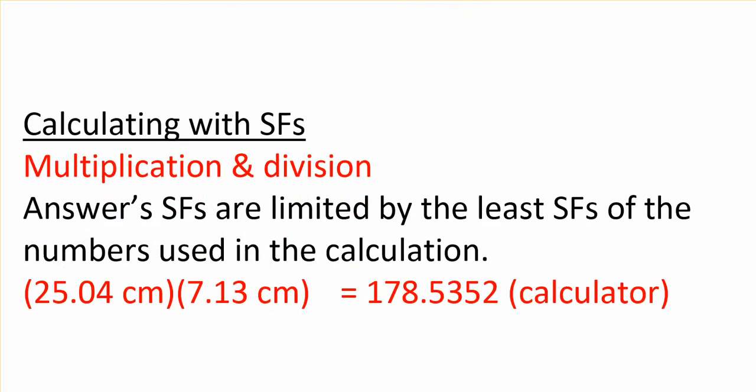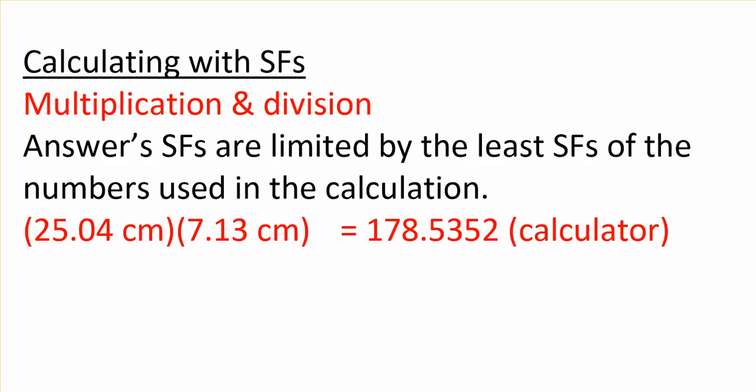Let's look at our rules for multiplication and addition and subtraction. When you multiply and divide, there's one rule. The rule is you look at the numbers that go into the calculation. This one has four sig figs. This one has three sig figs. And the one with the least sig figs will limit how many you can have in your answer.